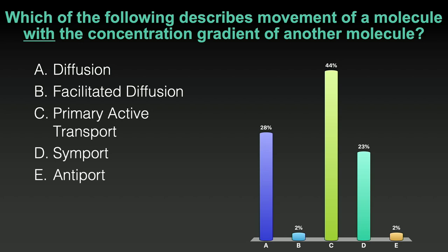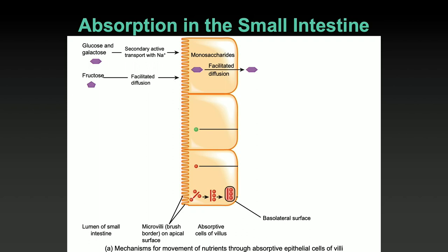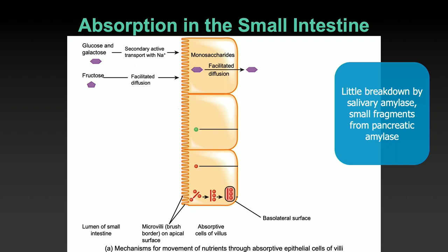Absorption in the small intestine — there will be more questions coming up, so keep your phones and web browsers open. There are four or five more questions. This was the breakdown of carbohydrates — largely there are little pieces left over, polysaccharides, that are broken down by brush border enzymes in the small intestine.